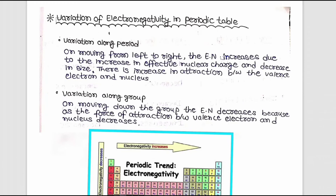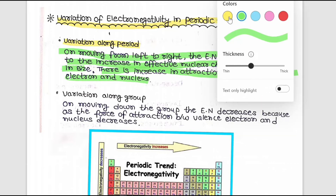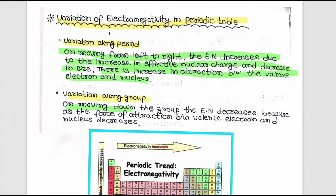Variation of electronegativity in the periodic table: along a period, electronegativity increases from left to right due to an increase in effective nuclear charge and decrease in atomic size, increasing attraction between valence electrons and the nucleus. Along a group, electronegativity decreases on moving down because the force of attraction between valence electrons and the nucleus decreases.